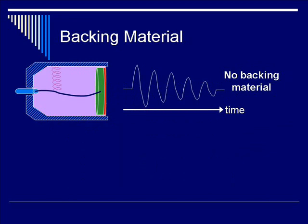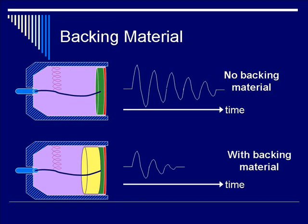Here's a cartoon of an ultrasound output with no backing material. If you add this yellow thick layer behind the transducer element, with the backing material, you have significantly reduced pulse duration, as shown with the decreased ringing. And that is desirable.